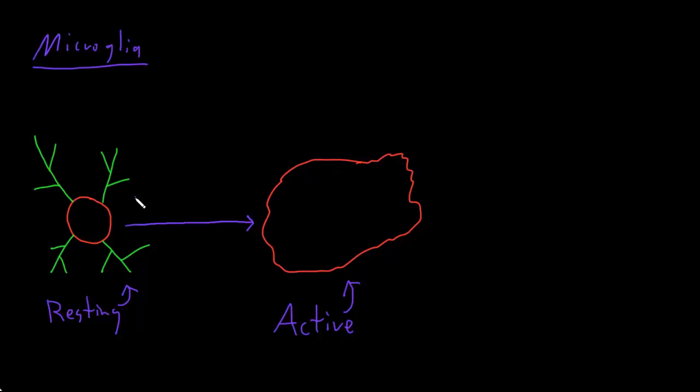They retract all these long branch processes and turn into these blob-like active microglia. And the main type of trouble they're looking for is inflammation. And whether that's inflammation from injury to the tissue of the central nervous system or an infection of some sort like a bacteria or a virus has entered the central nervous system.